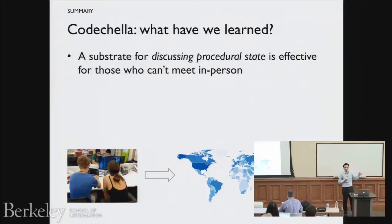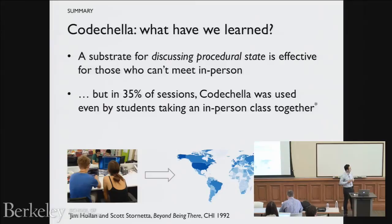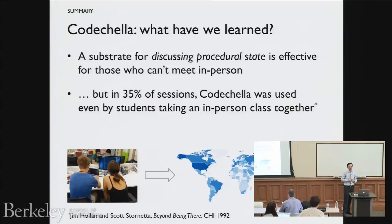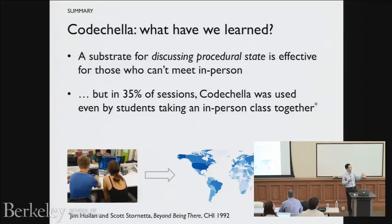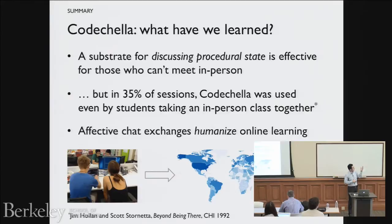A substrate for discussing procedural state can be useful for those who can't meet in person. Interestingly, in a third of sessions we found Coachella was used even by students taking an in-person class together — coded by seeing references to in-class context, like people mentioning Berkeley's 61A, or saying 'let's get pizza after this.' There's a classic HCI idea called 'Beyond Being There' — designing interfaces people would prefer to use even if they could be there in person. My hypothesis is that people liked having the visualization and talking about it, and these affective exchanges really do go toward humanizing online learning.